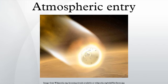For Earth, atmospheric entry occurs above the Kármán line at an altitude of more than 100 kilometers above the surface, while at Venus atmospheric entry occurs at 250 kilometers, and at Mars atmospheric entry occurs at about 80 kilometers.